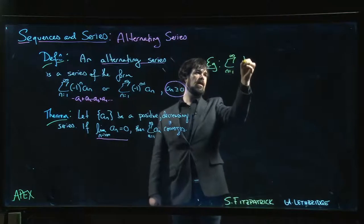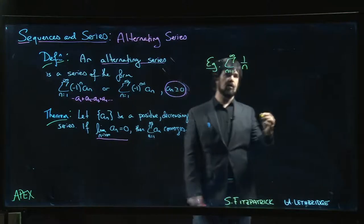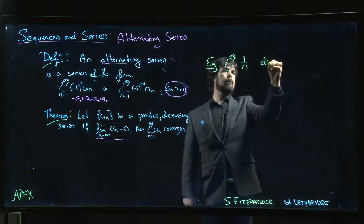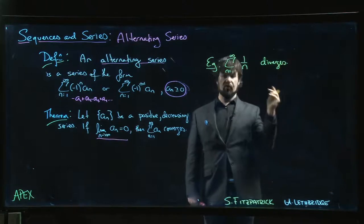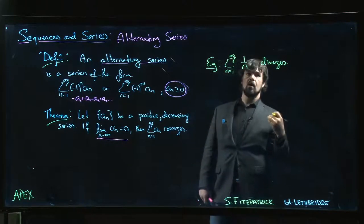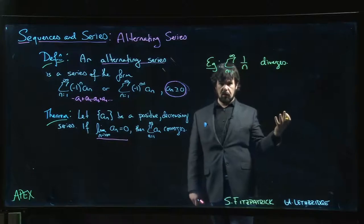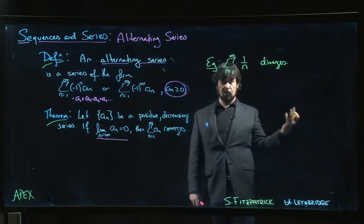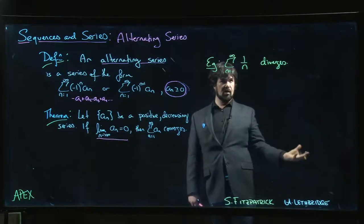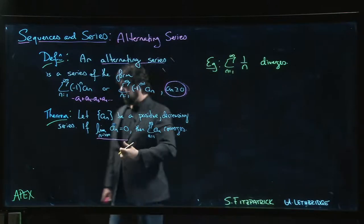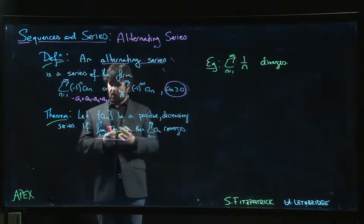We've seen that the series sum of n going from one to infinity, one over n, diverges. This is the harmonic series. The harmonic series diverges—it's the p-series with p equal to one. The integral test shows it, but there are direct proofs as well. It's a divergent series despite the fact that the terms go to zero.